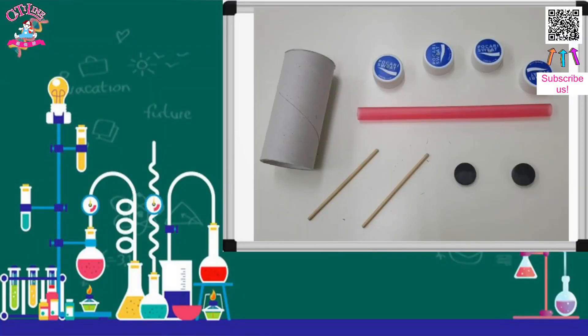Here is what you need to make the magnetic car. One empty toilet roll, a straw, four plastic bottle tops, two wooden kebab skewers, two small magnets, some blue tack.